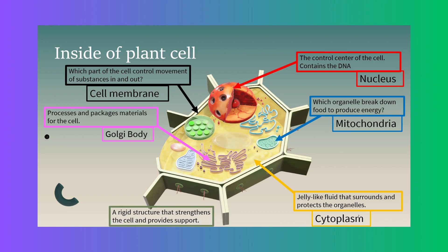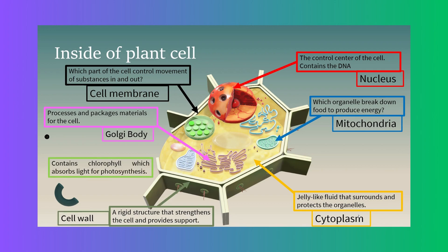One organelle you cannot find in animal cells is the cell wall, which gives the plant cell support and its specific shape. Another organelle unique to plant cells is the chloroplast, shown in green. The chloroplast contains a green pigment called chlorophyll, which absorbs light for the process called photosynthesis — a chemical reaction that is really important for plants because in this process they produce their own food. Remember: chloroplast is the cell organelle, and chlorophyll is the green pigment.